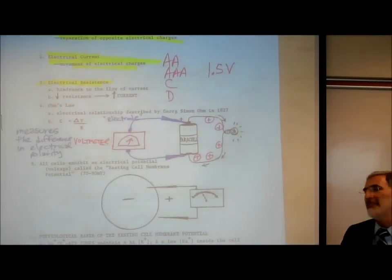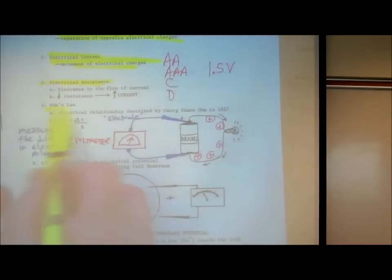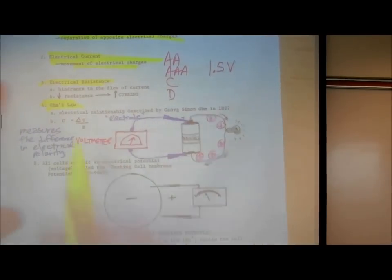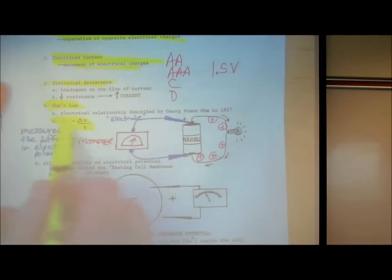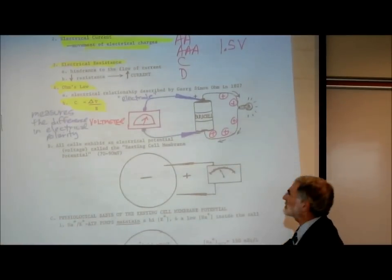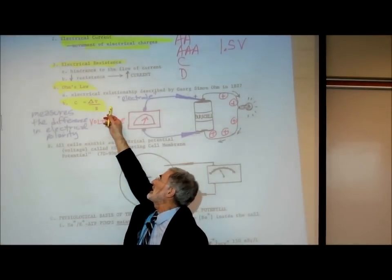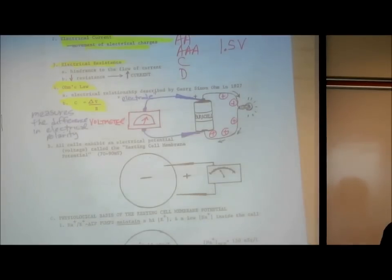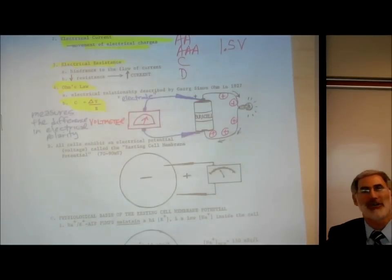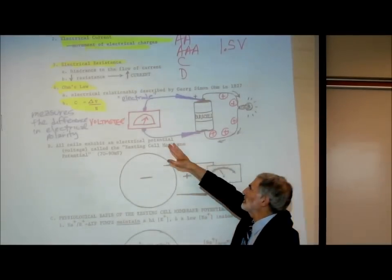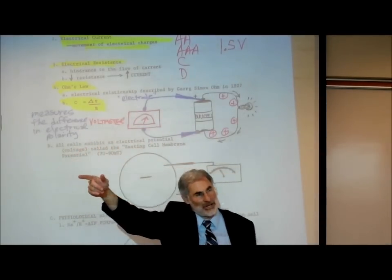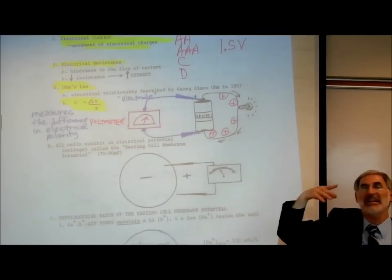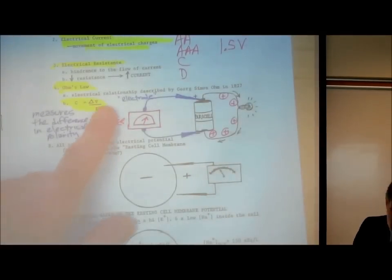Those of you who had physics learned something called Ohm's law. Ohm's law simply takes these three concepts and creates a relationship between them: electrical current equals voltage divided by resistance. Like any good formula, if you know any two, you can solve for the third. If you know voltage and resistance, you can calculate the current; if you know current and resistance, you can multiply them to determine voltage. That's Ohm's law.